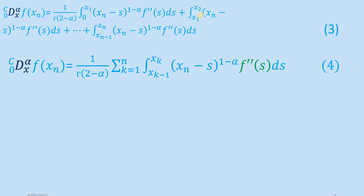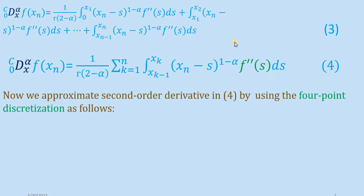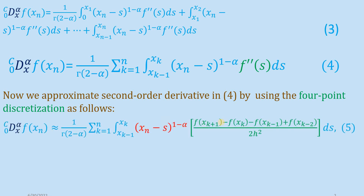In equation 4, you can notice that we have a term with the second derivative of a function. This second derivative can be approximated by using the four-point discretization as follows. The second-order derivative f double prime has been replaced by this four-point discretization method, where we have four functional values in the numerator and in the denominator we have the term 2h squared.